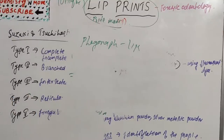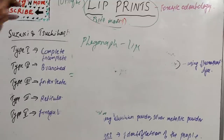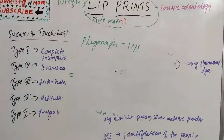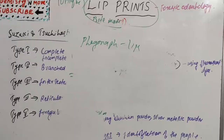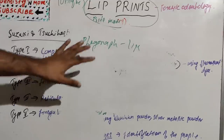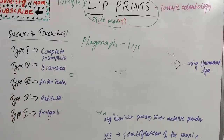That's all about lip prints. The basic idea is the same as bite marks — to identify a suspect. We covered the classification, the methods of transferring and developing lip prints using powder, X-ray, and chemicals, and the types: plastic, latent or hidden, and visible. This is enough to write a short note or short essay. A new topic in oral pathology will follow.